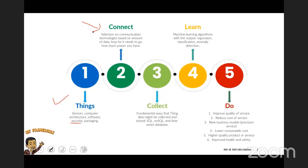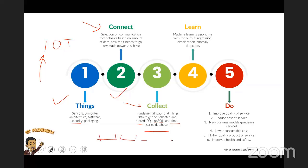The next layer is 'Connect.' Since the name implies IoT — Internet of Things — you need to connect to the internet. There are many protocols and technologies here: Wi-Fi, Zigbee, LoRa, 4G, and 5G. After connecting, we have 'Collect' — the big data layer. The number of connected things will eventually exceed the human population. The database can be SQL, NoSQL, or most famously, Time Series Database (TSDB), since you're measuring data like time and temperature.